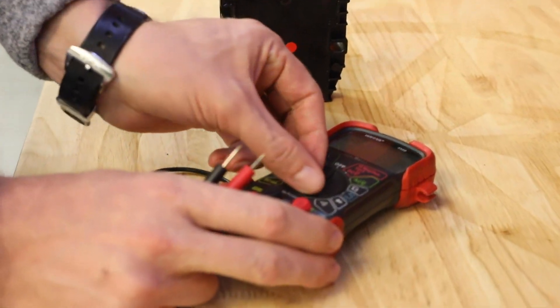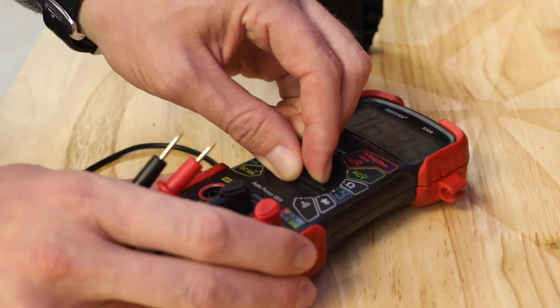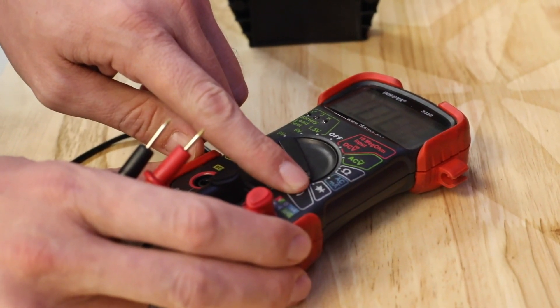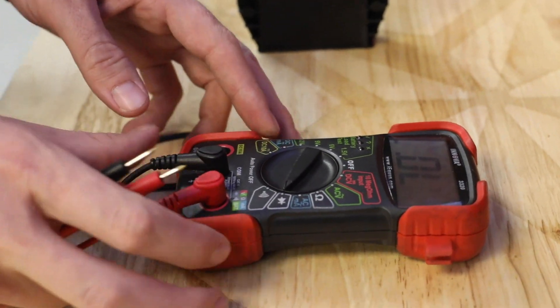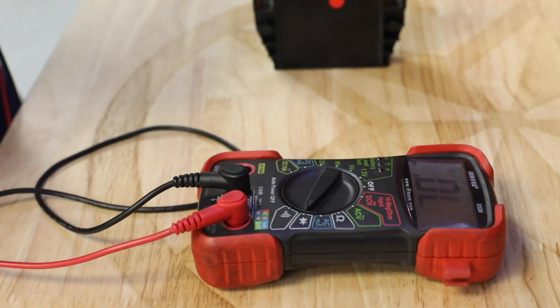So where we'll start on our meter, we're going to want to go ahead and change our meter setting to the diode check setting. And by default it will read OL for open lines.